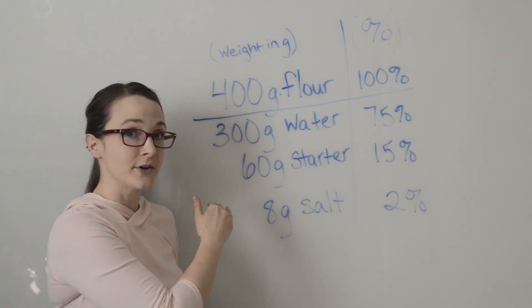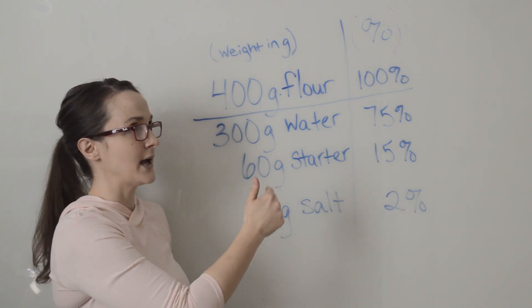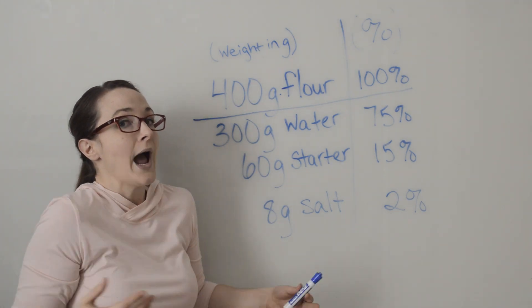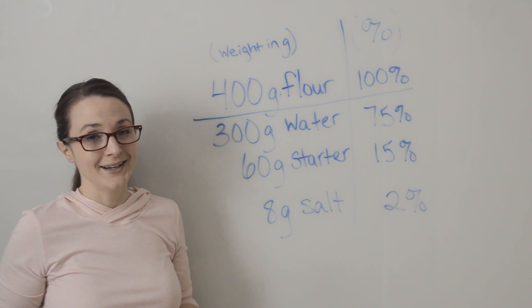So we know how to get there and we know how to reverse engineer that. Honestly, as you're looking at formulas, that reverse engineering is more of what you're going to be doing. But why do we do that? The main reason is because it makes scaling much easier.